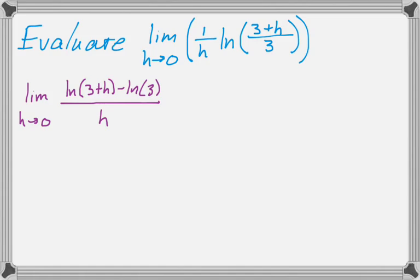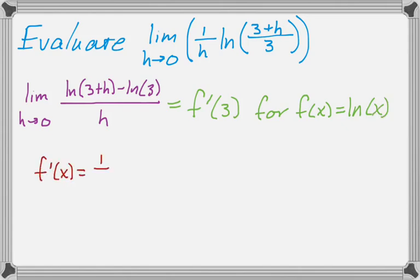So this I recognize is f prime of 3 for the function f of x equals natural log of x. And I know that f prime of x in this case would be 1 over x. And therefore f prime of 3 is 1 third.